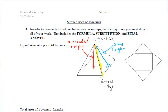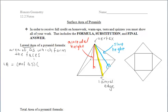To find the lateral area of this pyramid, it's going to be the area of the triangles which form the faces. Instead of finding the area of each separate triangle and adding them up, since this is a regular polygon, we can take a shortcut: find the area of one triangle and multiply it by however many triangles we have, since all of the triangles are congruent in a regular square pyramid.